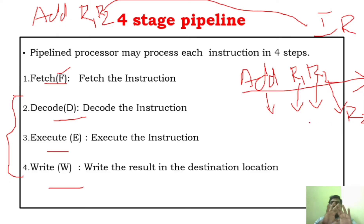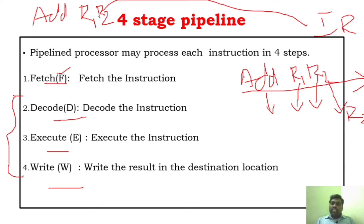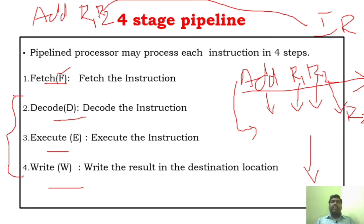At the end of the decode phase, it will understand what operation we have to do, what is the source operand, and what is the destination operand. Now it has all the information — what it has to do and what the data is. Everything is present. Only now it starts executing — performing the actual addition of R1 and R2 in the execution phase. And what is the write phase? After completing ADD R1, R2, the result has to be stored. That particular phase is called the write phase.